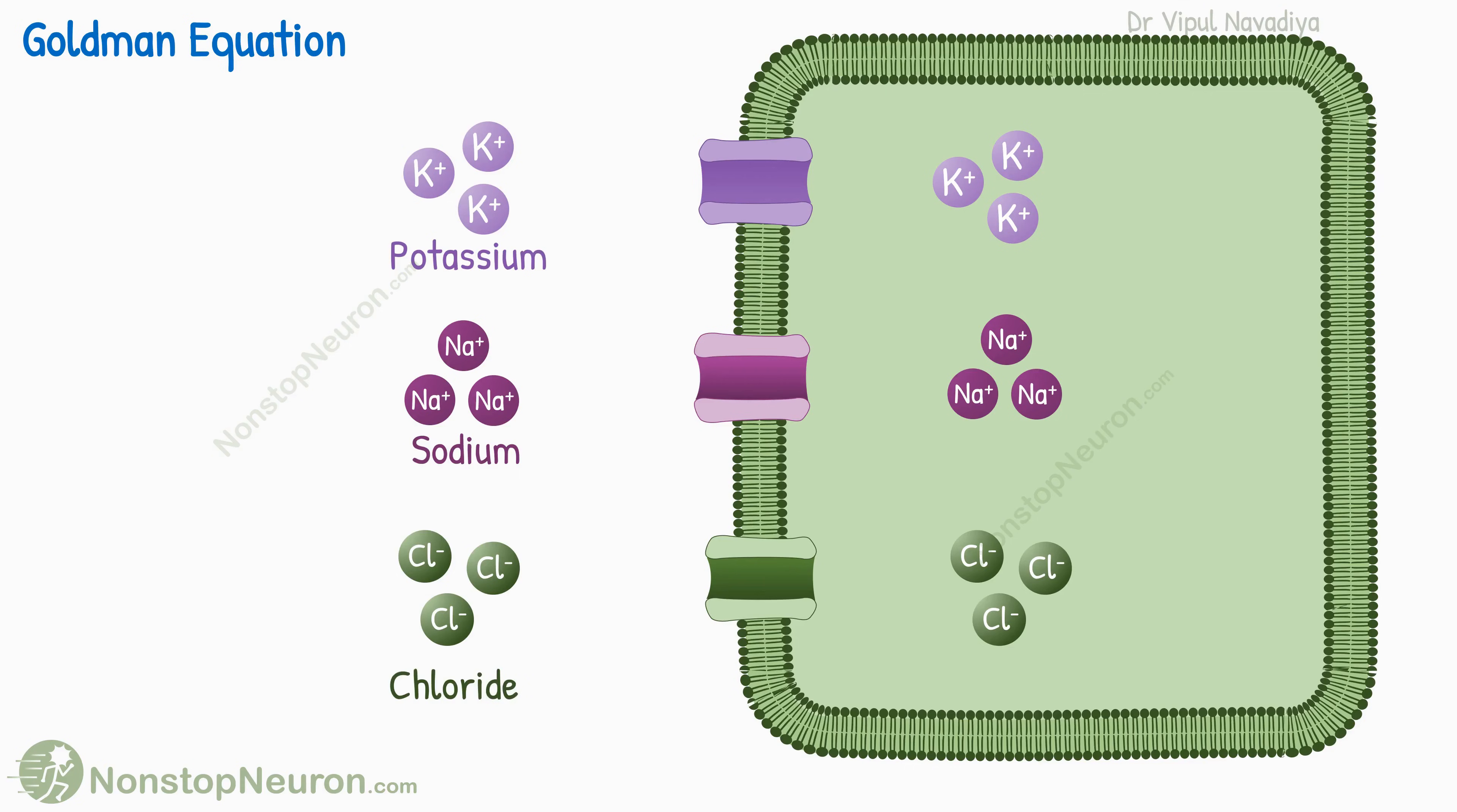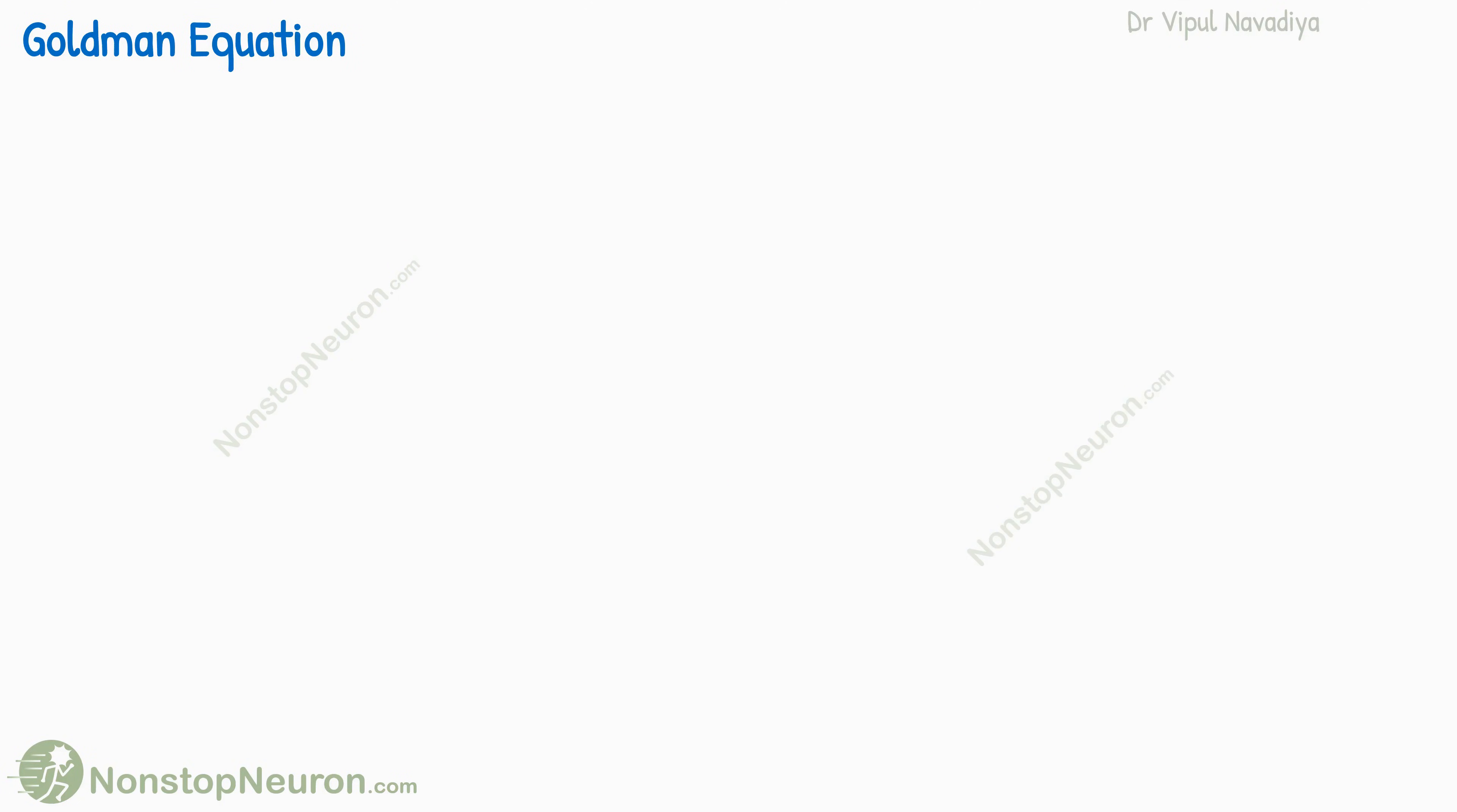And second, the permeability of the membrane varies for different ions. If a membrane is not permeable to a particular ion, that ion will not diffuse, and therefore it will not contribute to the development of potential. So when calculating the combined potential, we need to take into account the permeability also.